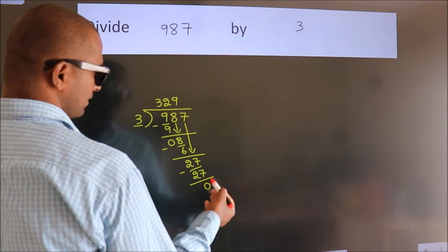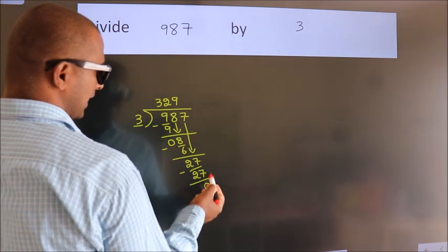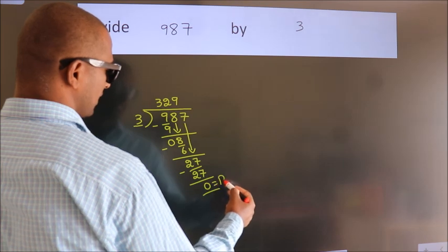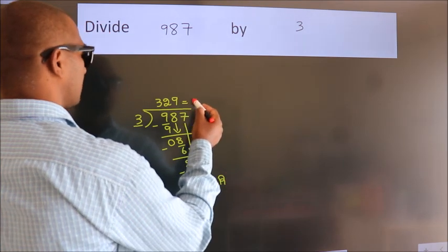After this, no more numbers to bring down. So we stop here. This is our remainder. This is our quotient.